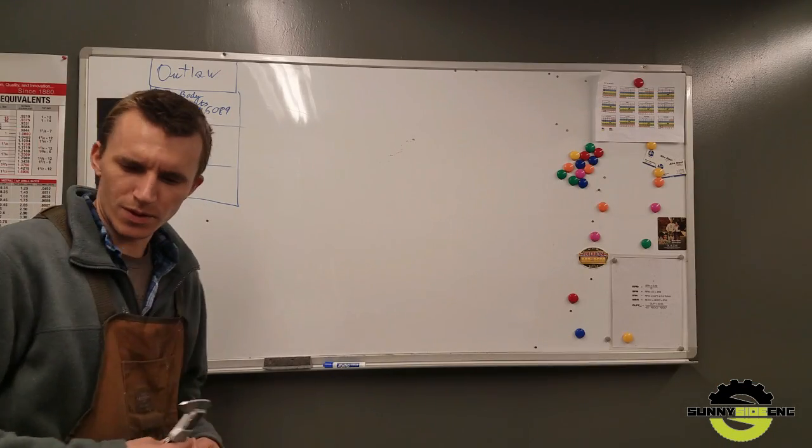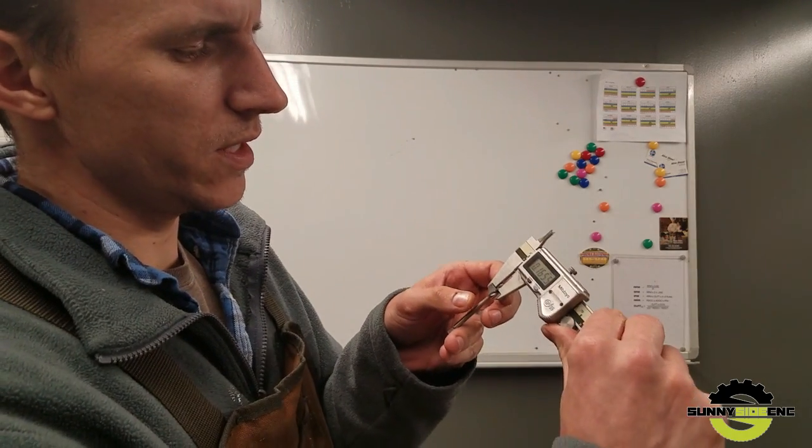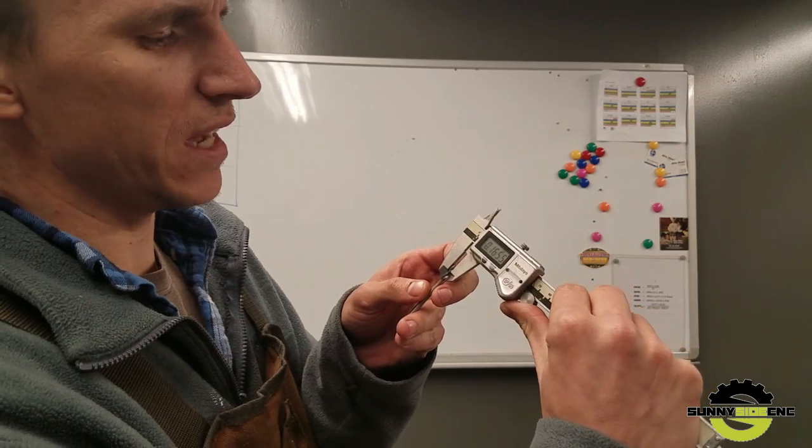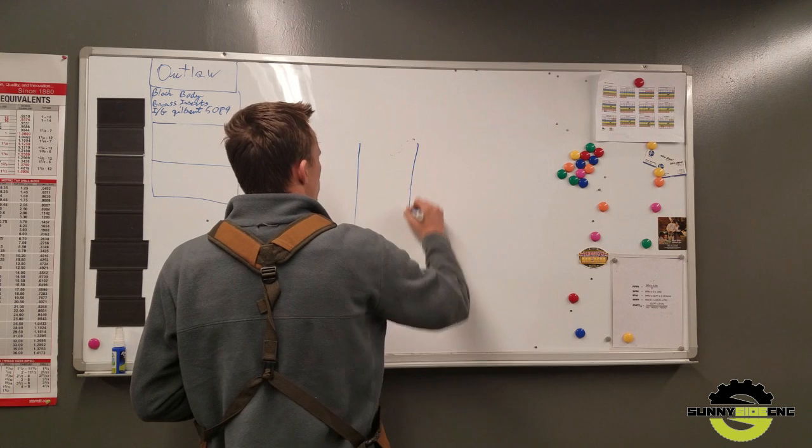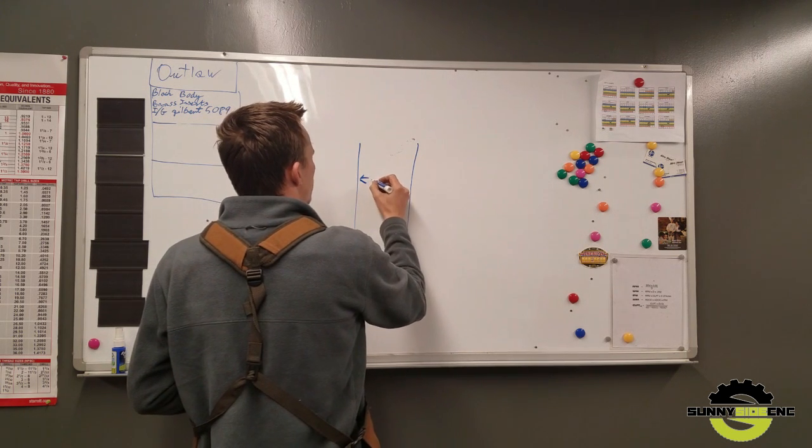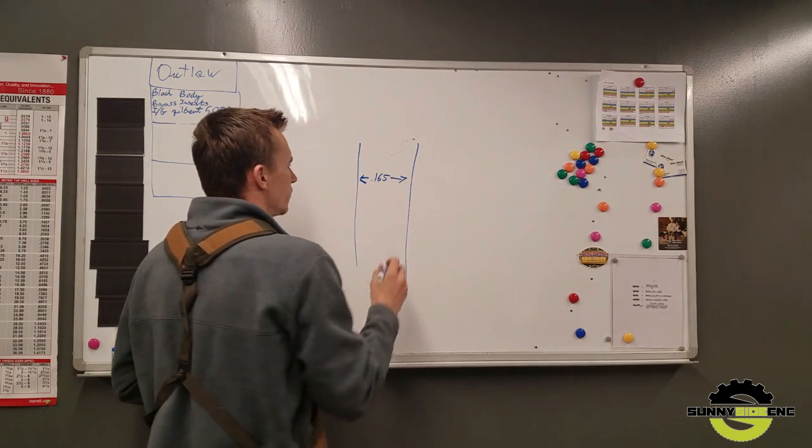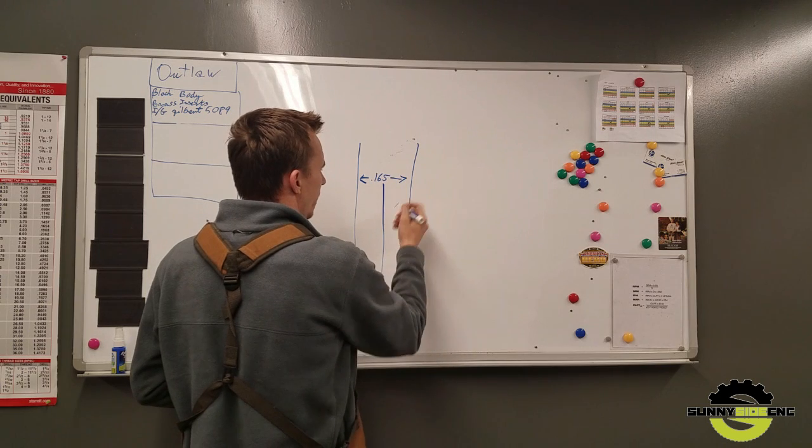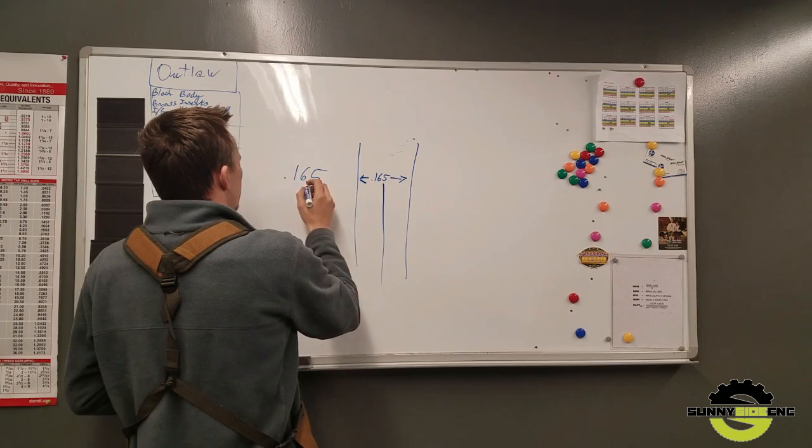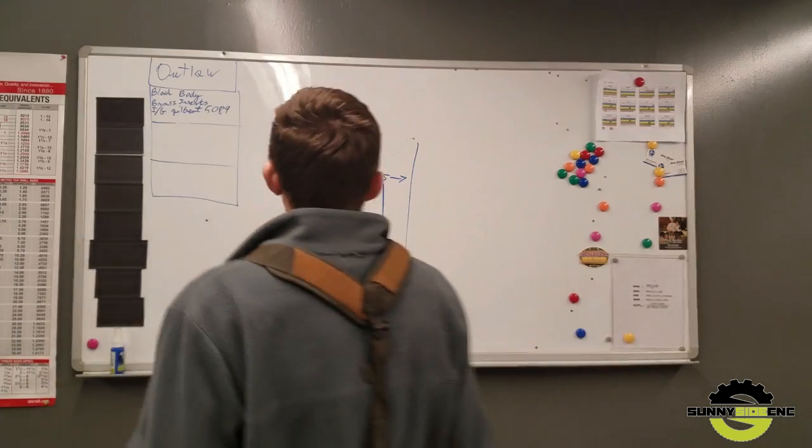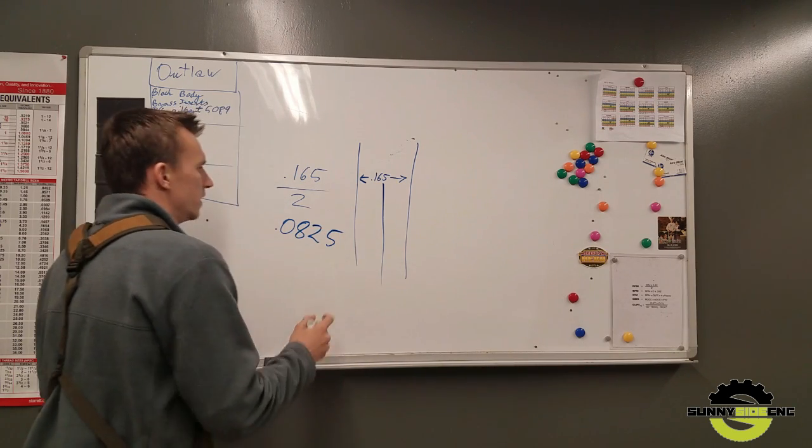The reason why we're going 100 thousandths is because I know that 8-32 tap is 0.165 inches. So if you have a hole with a diameter of 0.165, you gotta take the radius of the hole, which is half. So 0.165 divided by 2 is 0.0825.